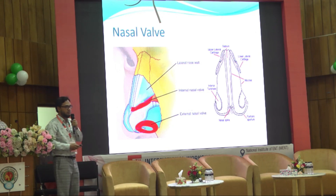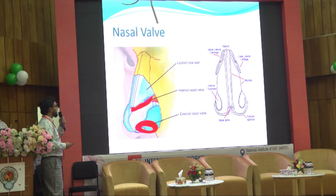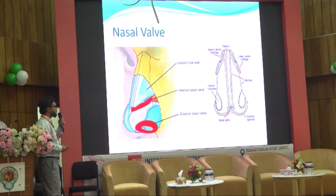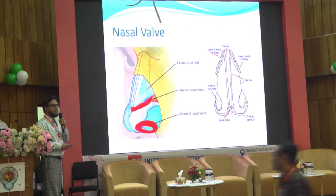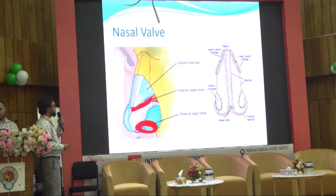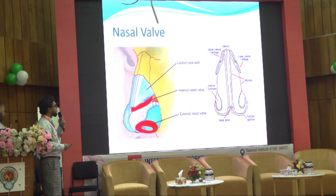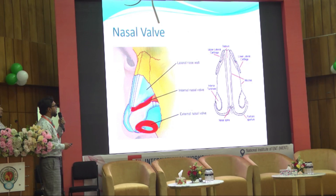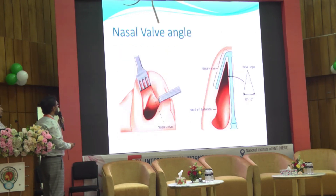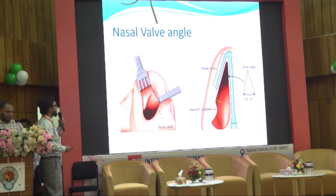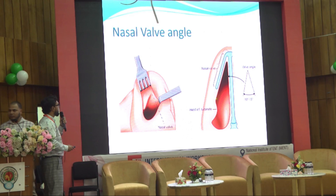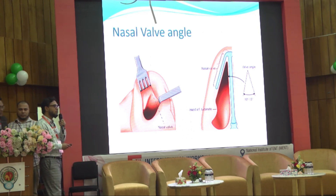The nasal valve is important for maintenance of nasal patency and for a functioning nose. There are two nasal valves: the external nasal valve, formed by the lower lateral cartilage and nasal septum, and the internal nasal valve, formed by the nasal septum and upper lateral cartilage. For proper nasal patency, an angle of 10 to 15 degrees should be maintained between the septum and upper lateral cartilage.